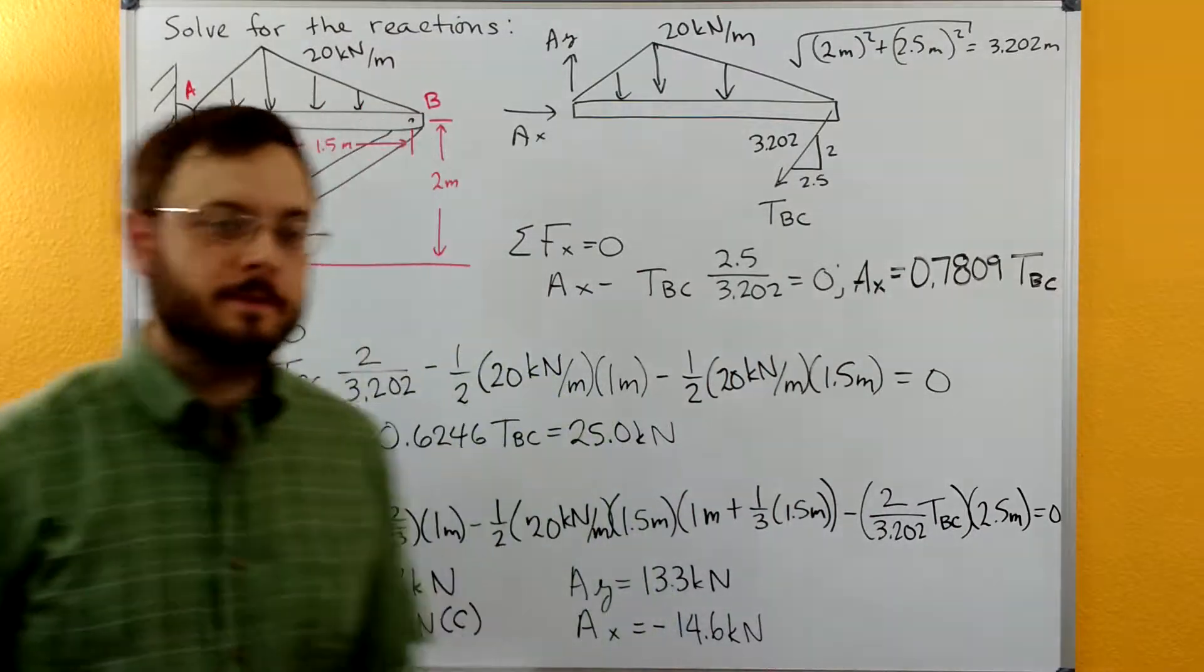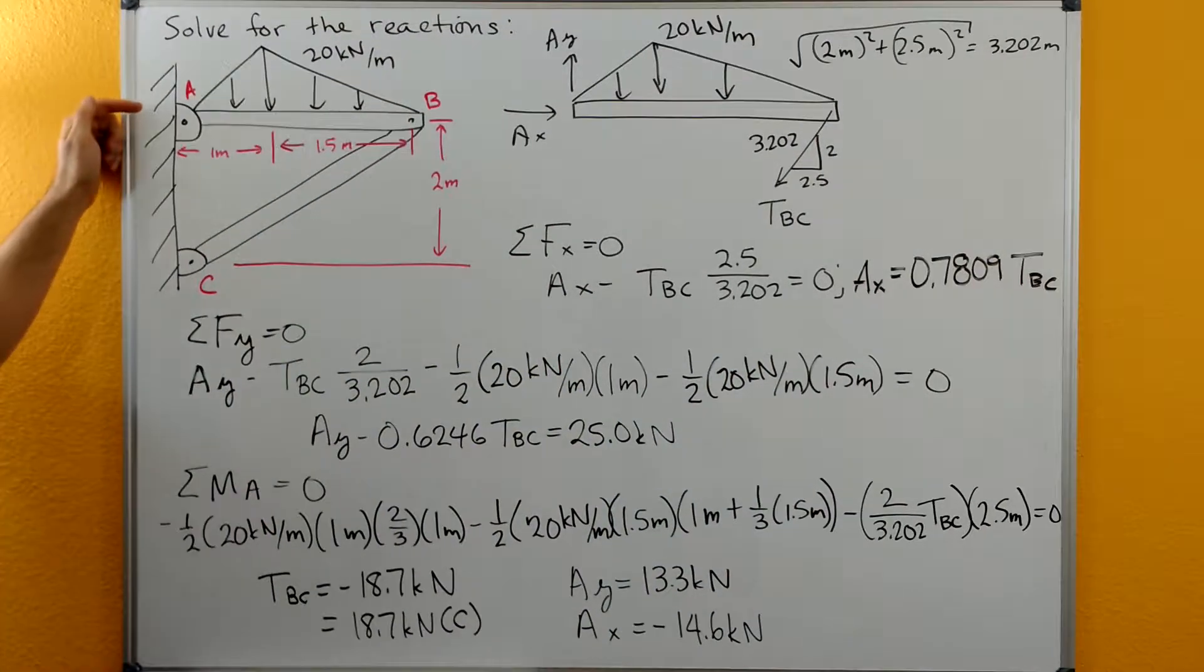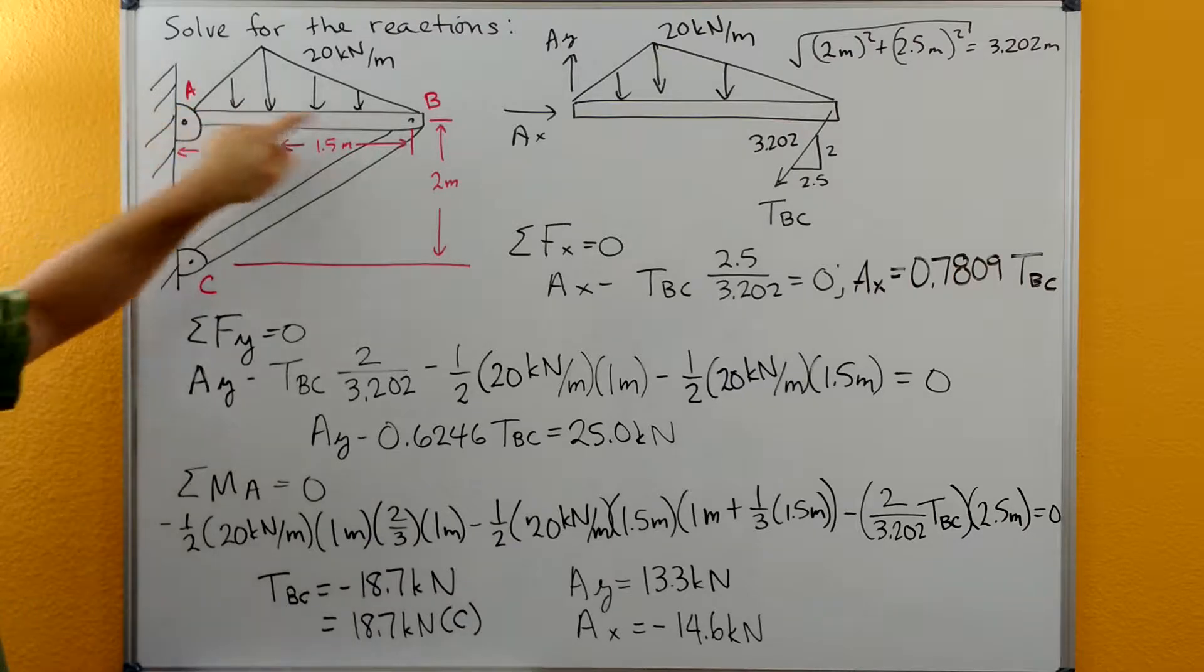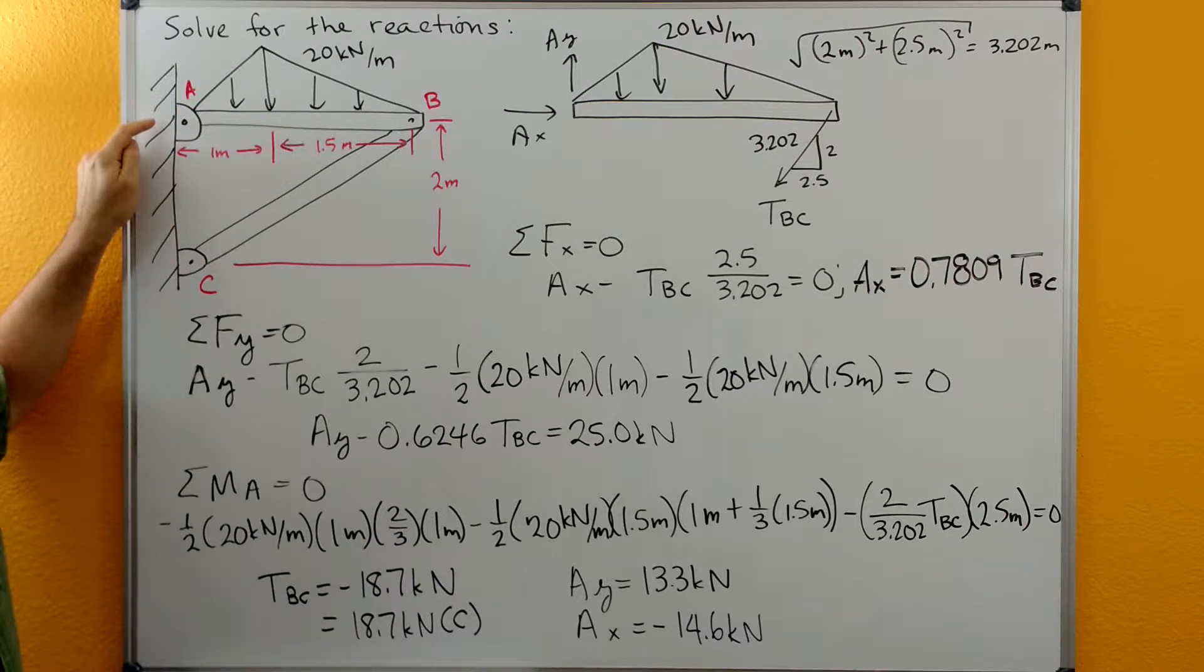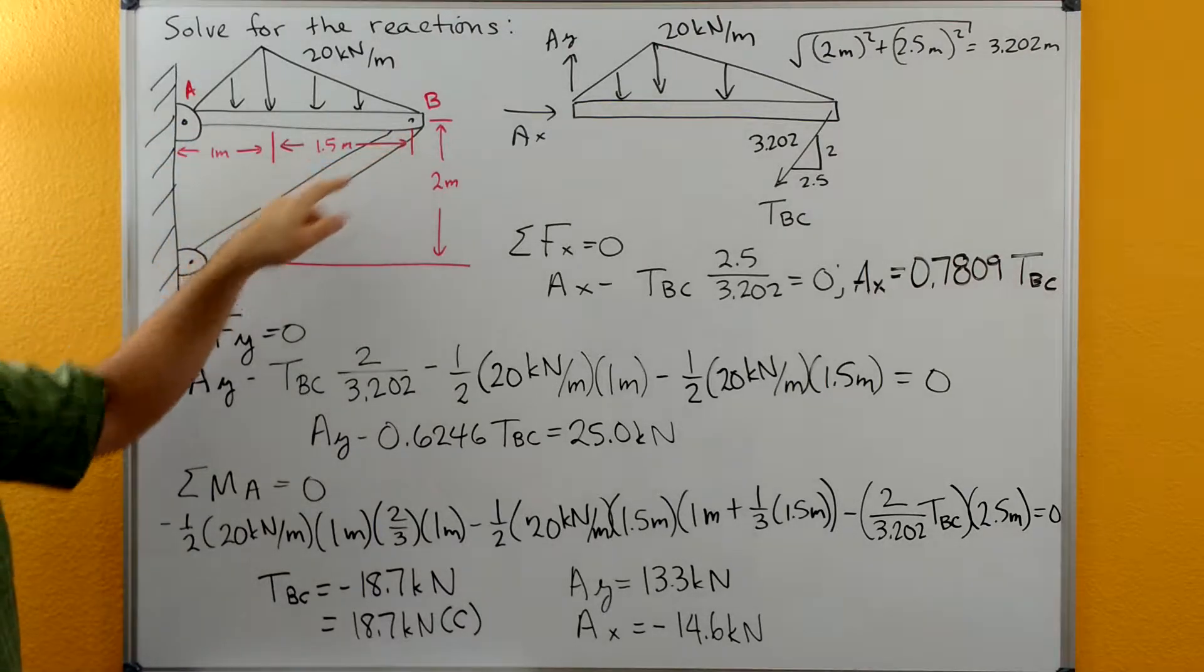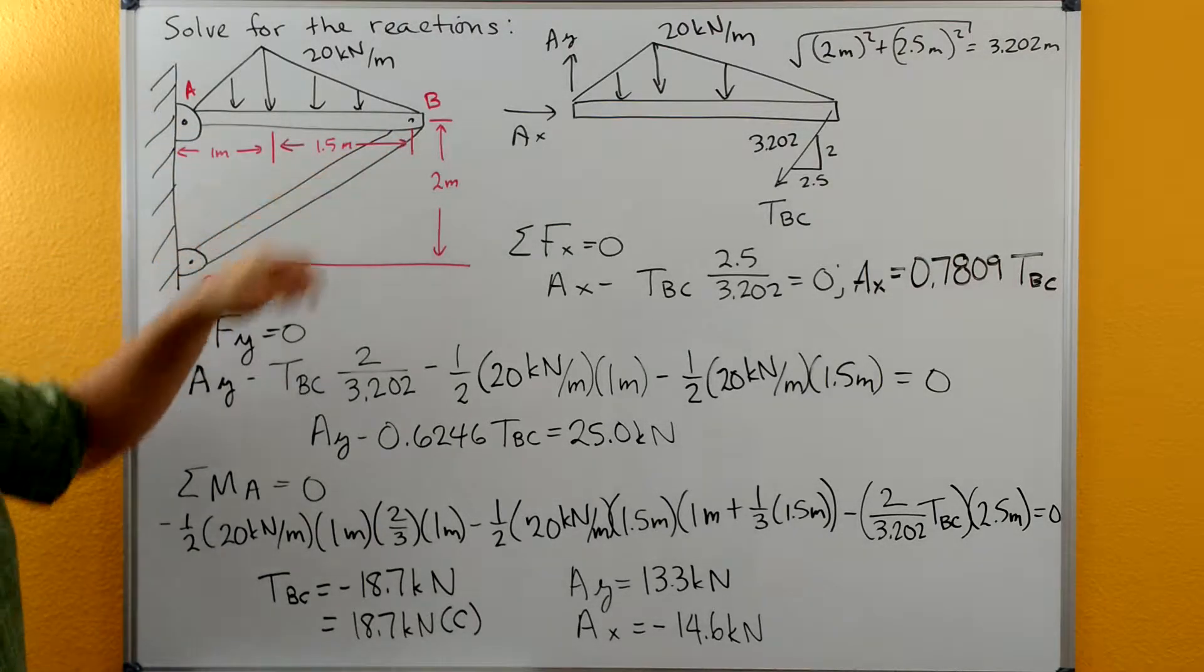Hi, welcome to the statics tutorials. So for this problem we have a rigid body that's supported on this end with the smooth frictionless pin connection at A and then it's connected to a weightless link here B to C.